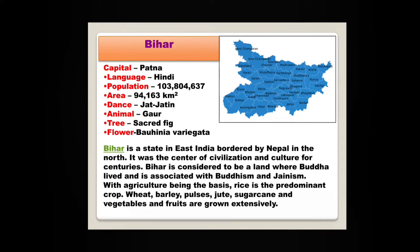Bihar — the capital of Bihar is Patna. Bihar is a state in East India bordered by Nepal in the north. It was the centre of civilisation and culture for centuries. Bihar is considered to be a land where Buddha lived and is associated with Buddhism and Jainism. With agriculture being the basis, rice is the predominant crop. Wheat, barley, pulses, jute, sugarcane, vegetables and fruits are also grown here in extensive amounts.